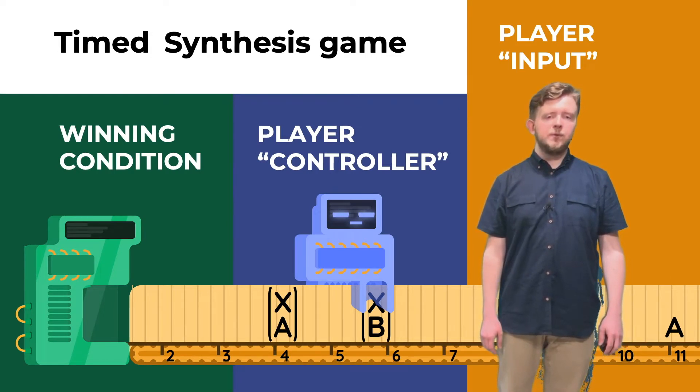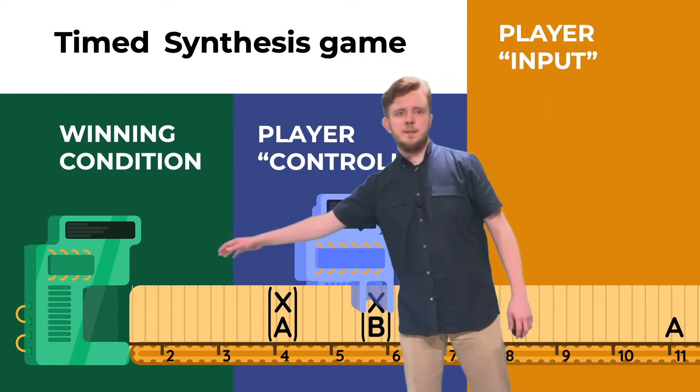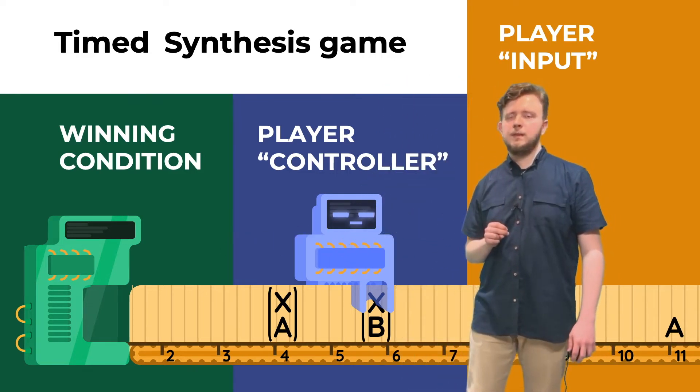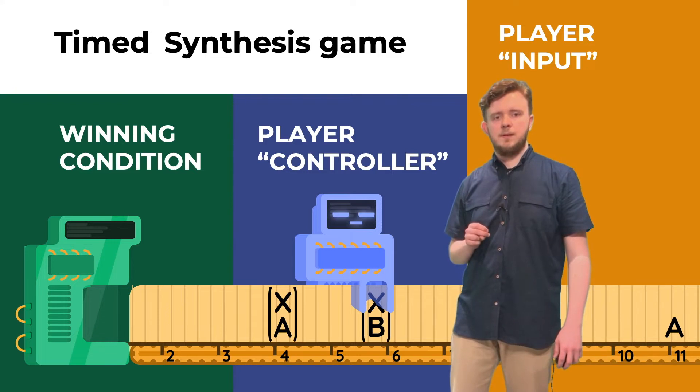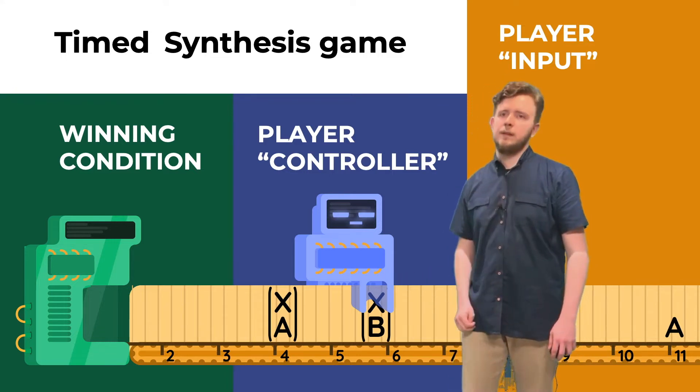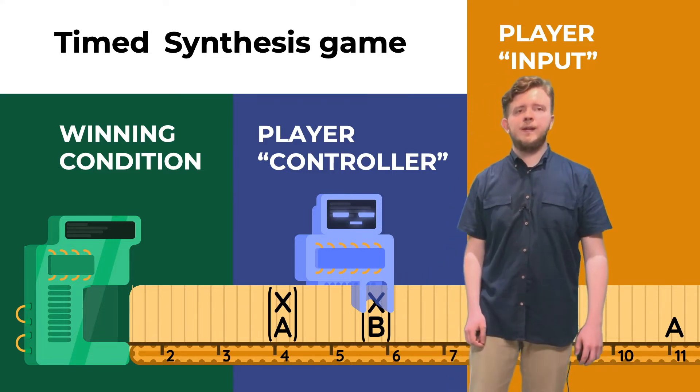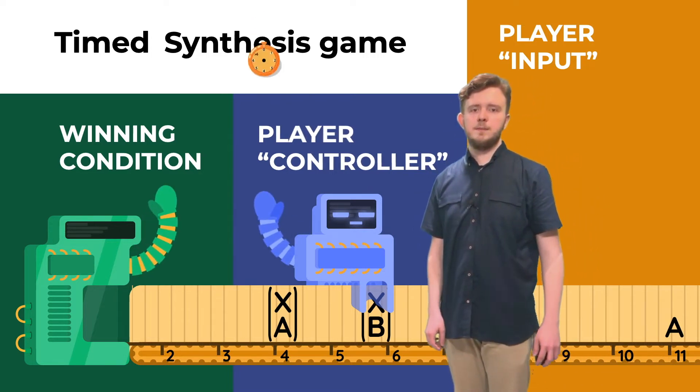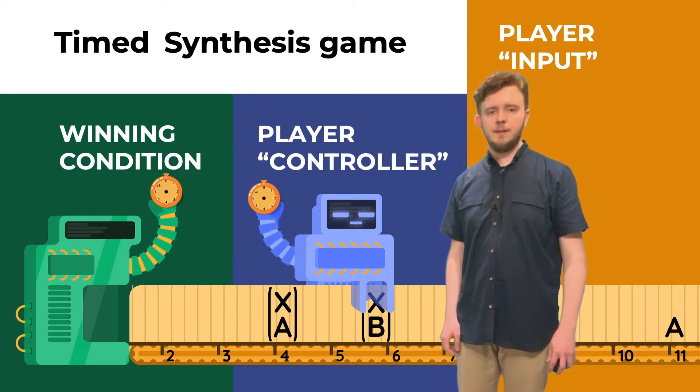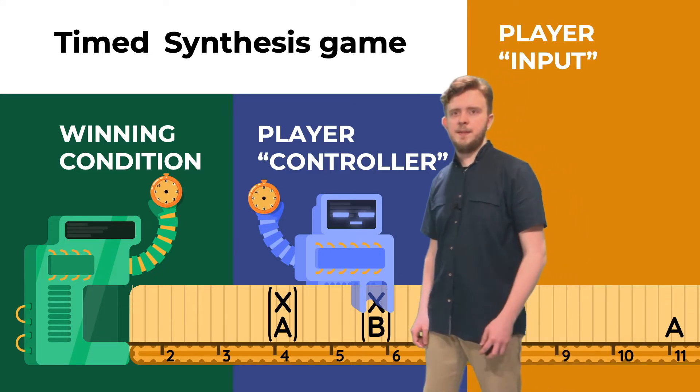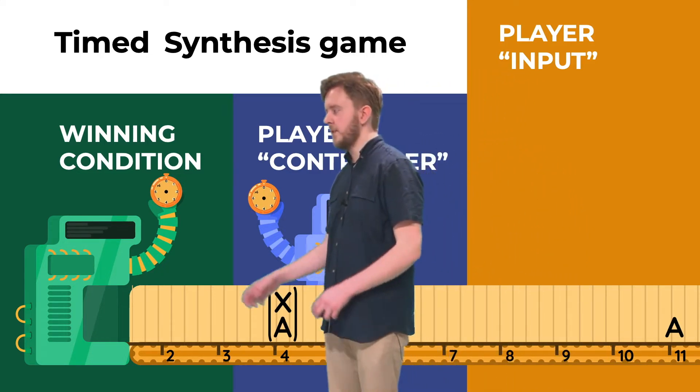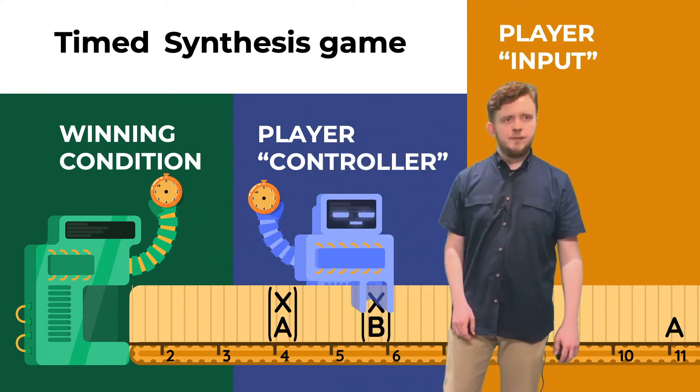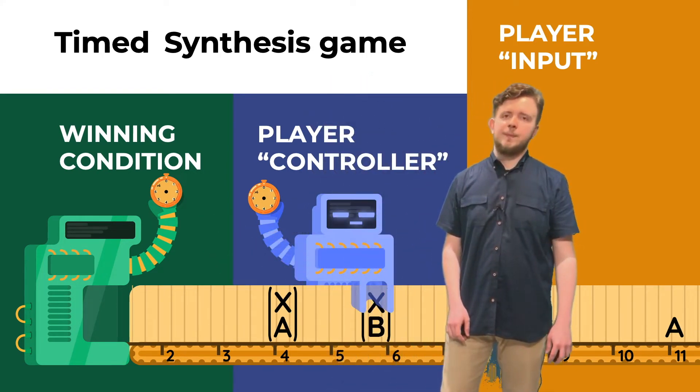An important remark here is that those two devices do not have a direct access to the timeline. They don't see the exact time values of the input symbols. Therefore, they need some different way of measuring time. That's why they are given clocks. For the sake of simplicity, in this presentation I chose to give them only one clock each. But in general, those machines can have arbitrary numbers of clocks.